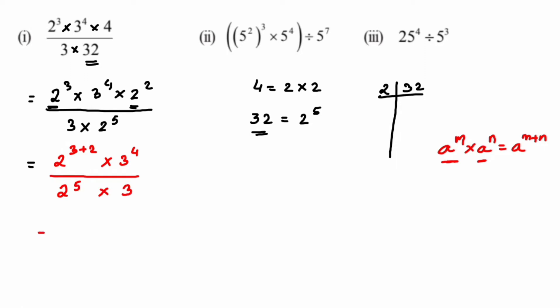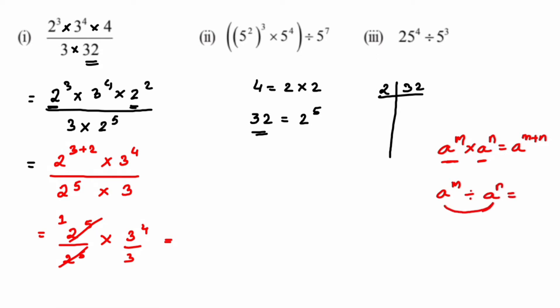I'm separating them: 2 to the power 5 upon 2 to the power 5 — numerator and denominator are the same, so we get 1. Then for 3 to the power 4 upon 3, we use the division law: a to the power m divided by a to the power n with same base means subtract the powers. So 3 to the power 4 minus 1 equals 3 cubed. That's the answer for the first question.